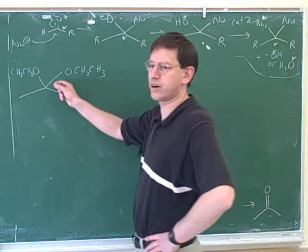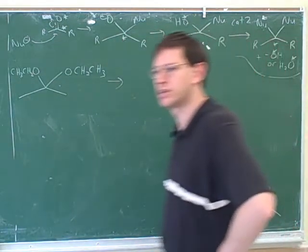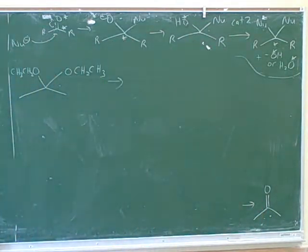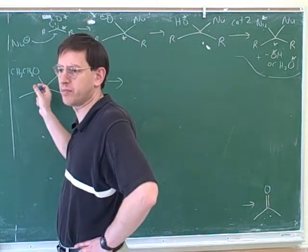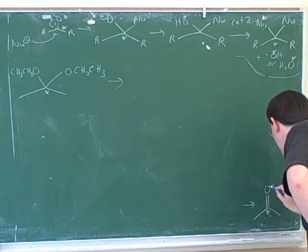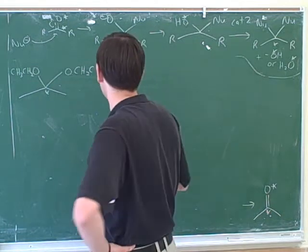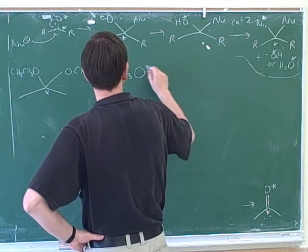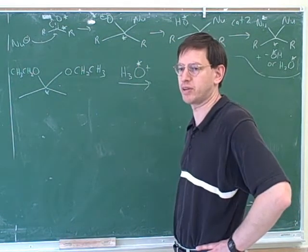Let's say we want to do this synthesis. We want to take this starting material and turn it into this final product. What reagents do we have to add to go from this starting material to this final product? We can put in this asterisk to show that this is the hidden carbonyl carbon. But we should not put an asterisk on either of these oxygens, because these are not the carbonyl oxygens — these are the oxygens from the alcohols. We're going to add a carbonyl oxygen by adding H3O+, so I'm going to put the asterisk here to show that this is where the carbonyl oxygen is coming from.